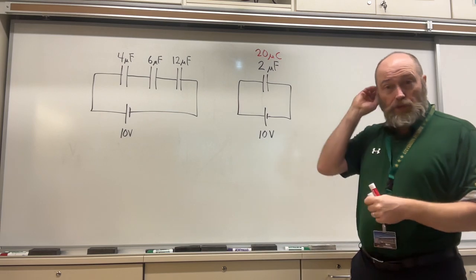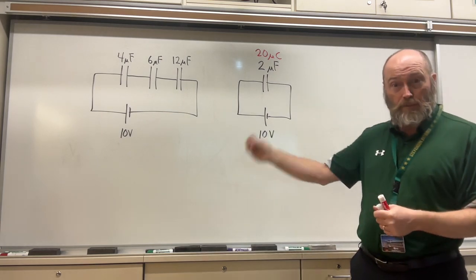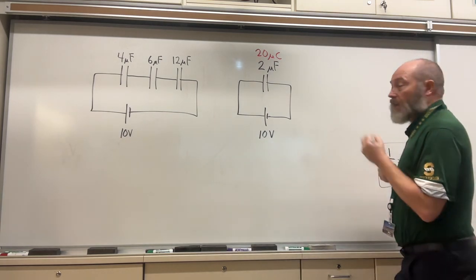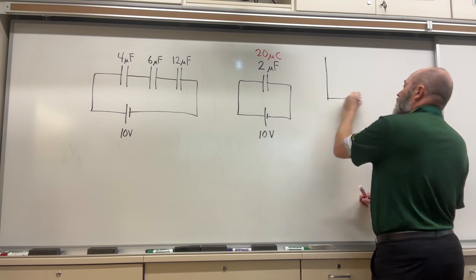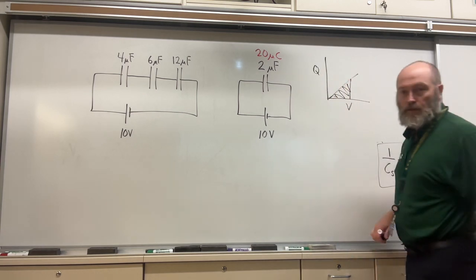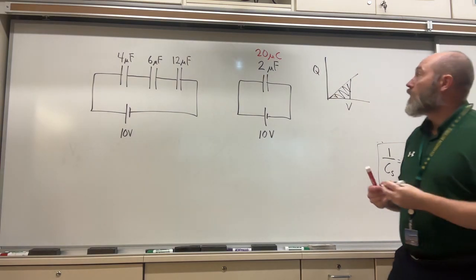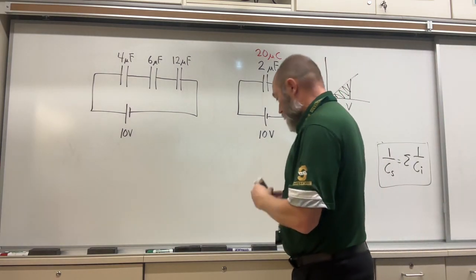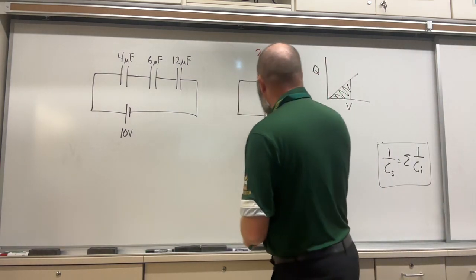And if you wanted to, you could do one half Q times V. Remember where that comes from. You know, it's on the equation sheet, but just remember, it's also, you're finding that the area there. So you could go.